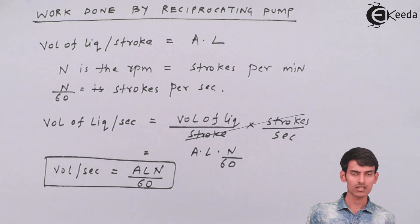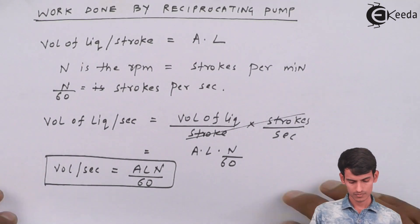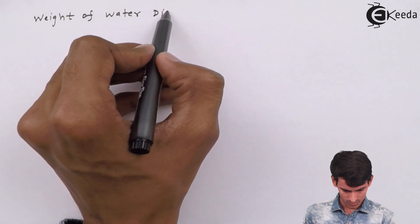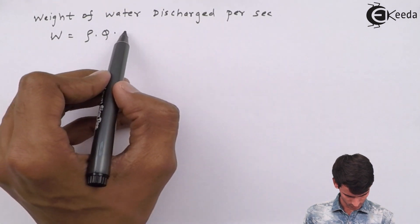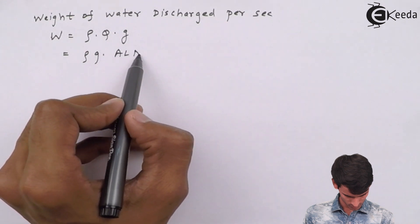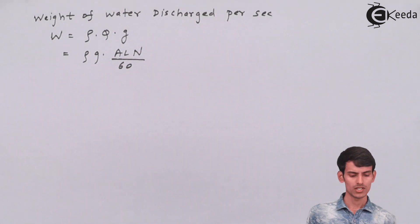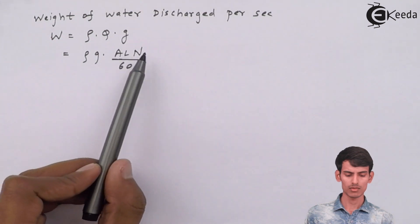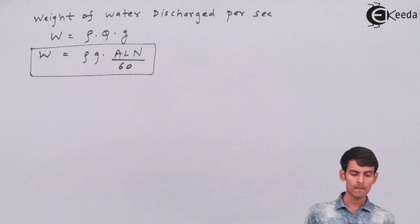We know volume per second. Now let's get the weight of water from this. Since density is mass upon volume, mass equals volume into density, and weight equals mass into gravity. So weight equals ρ × g × volume. Therefore ρ × g × A × L × N/60 gives you the weight of water discharged per second.